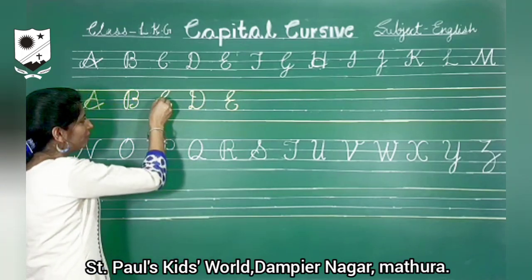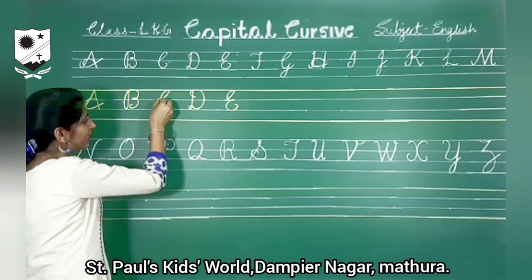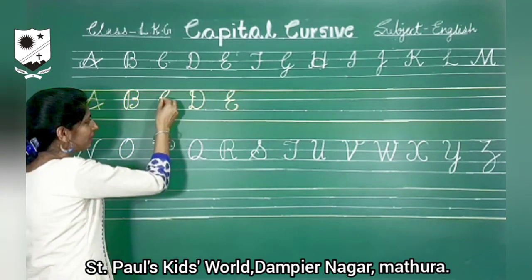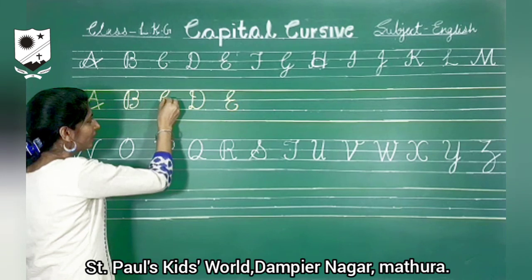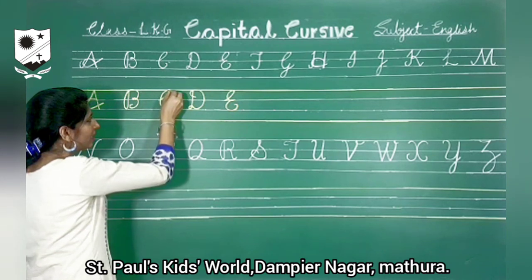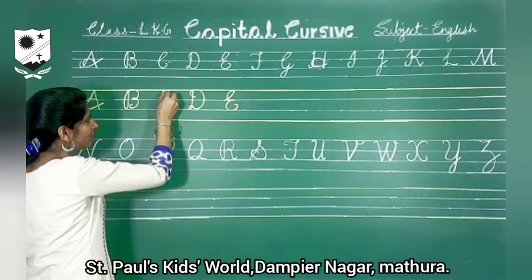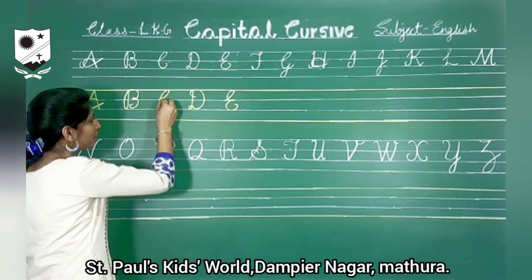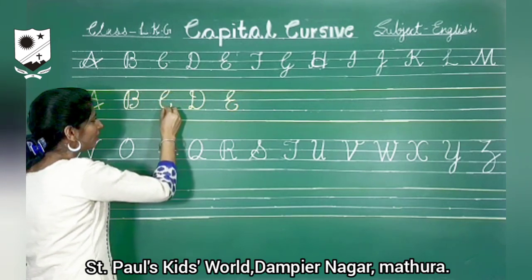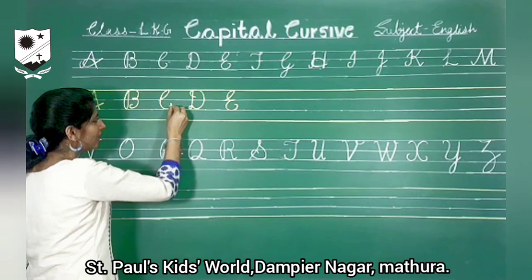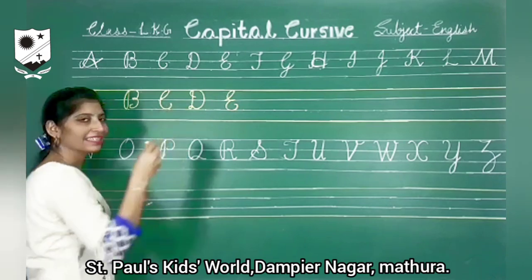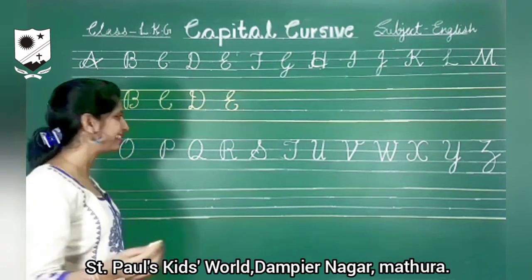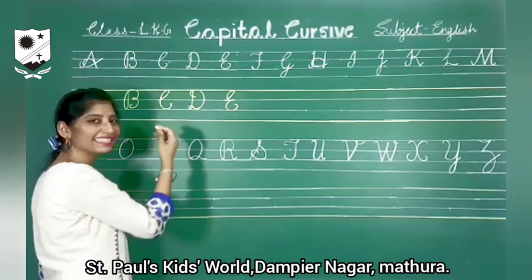We will start from the second line. Capital C. Look here. Take a curve, big curve and leave it. Capital C.